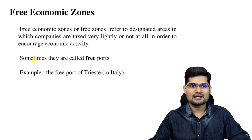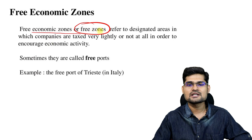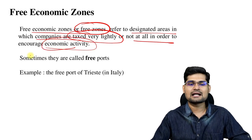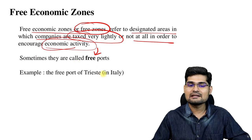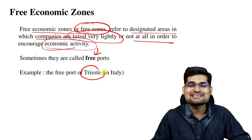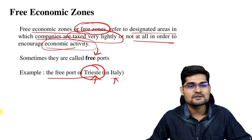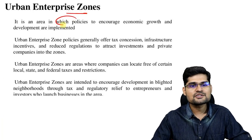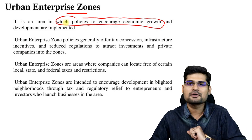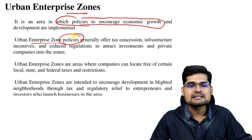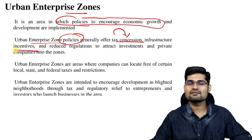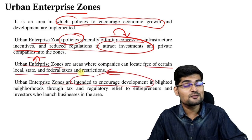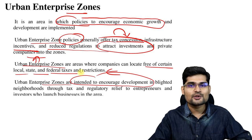Then comes free economic zones (FEZ) — designated areas where companies are taxed very lightly or not at all, in order to encourage economic activity. The free port of Trieste in Italy is a famous example from the Mediterranean. Finally, urban enterprise zones (UEZ) are areas with policies to encourage economic growth, offering tax concessions, infrastructure incentives, and reduced regulation to attract investment, especially from private companies.